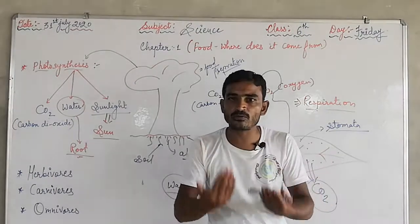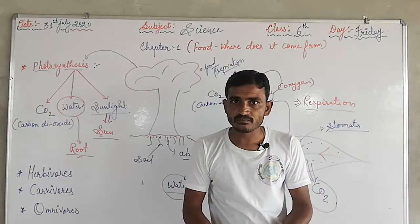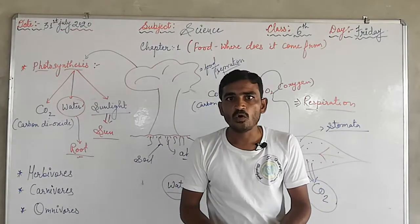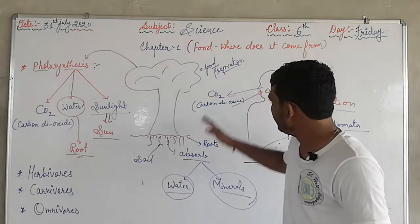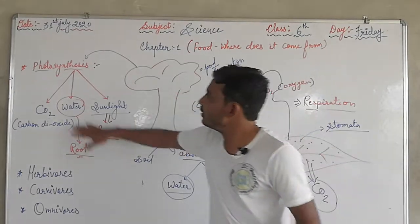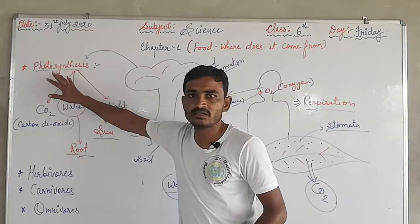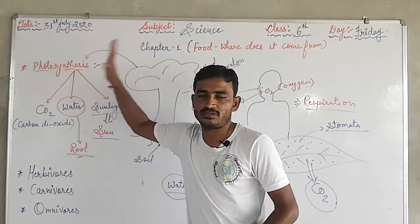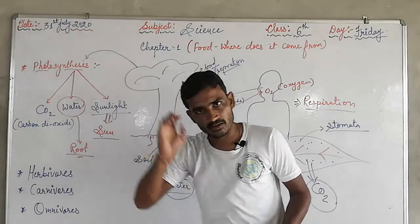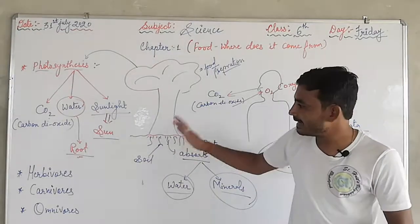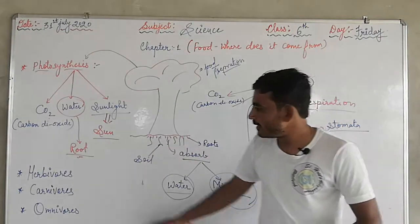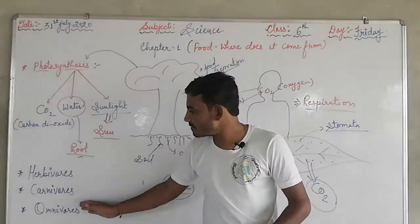So the plant absorbs carbon dioxide and releases oxygen. This means the plant's respiration is just the opposite of ours. So that was your photosynthesis process — I hope you understood it clearly.